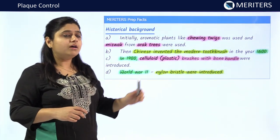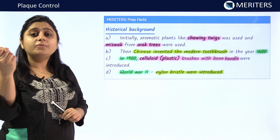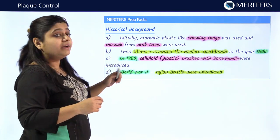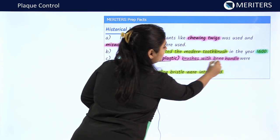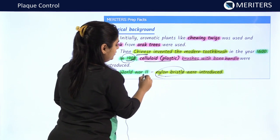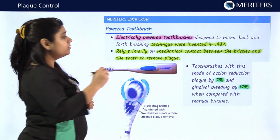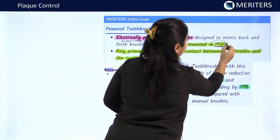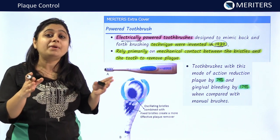For an overview of the historical background: initially, twigs of aromatic plants and barks of trees like arach trees in the form of miswak were used. The first modern toothbrushes were invented by the Chinese, and in 1900 celluloid plastic brushes with bone handles were developed. During World War 2, nylon bristles were introduced. Powered toothbrushes, also known as electrically driven or battery-operated toothbrushes, were first designed in 1939.